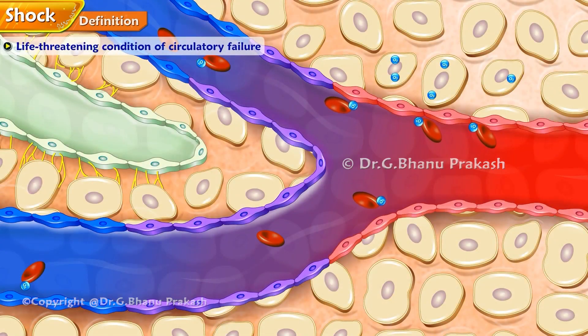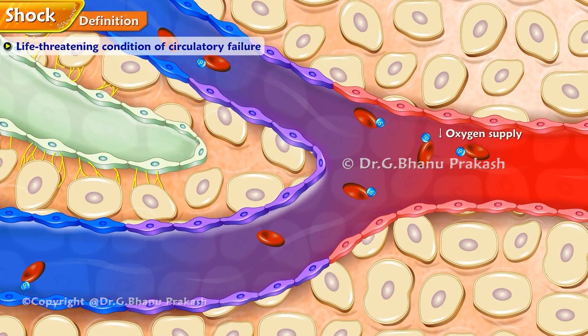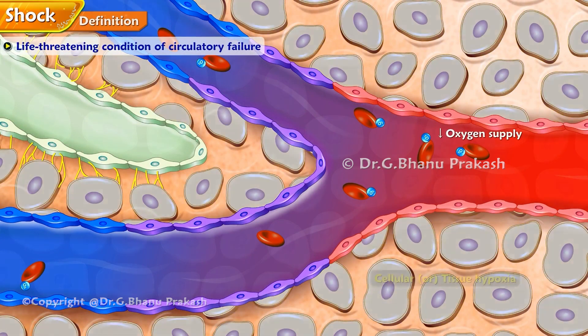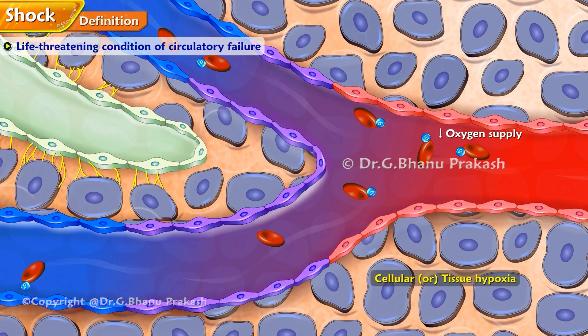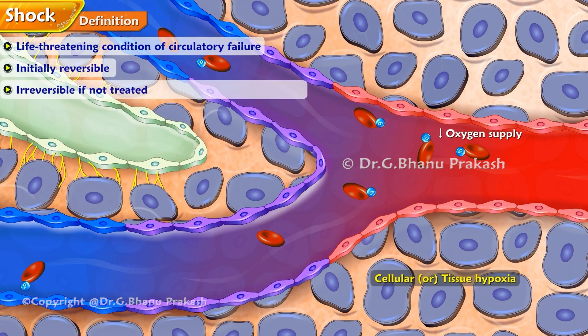Shock definition: Shock is a life-threatening condition of circulatory failure causing inadequate oxygen delivery to meet cellular metabolic needs and oxygen consumption requirements, producing cellular and tissue hypoxia. It may be initially reversible but becomes irreversible if not treated, leading to multi-organ failure and death.